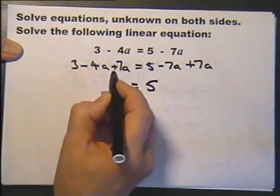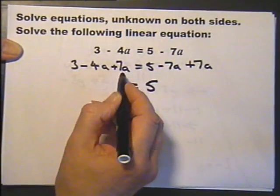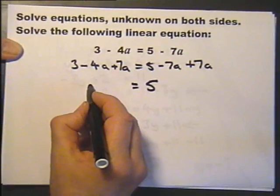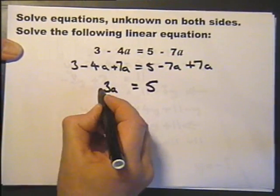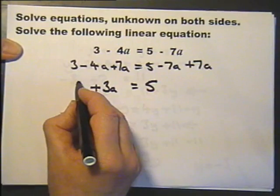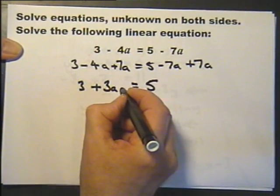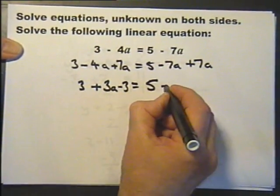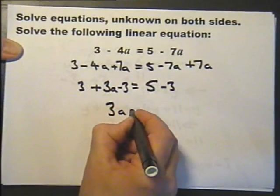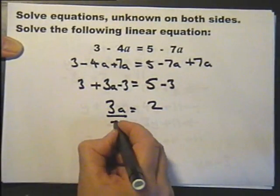Because that cancels leaving me with 5. This will be minus 4a plus 7a, which is the same as 7a minus 4a, which is 3a. Plus 3a. Now I need to subtract 3 from both sides, which will leave me with just 3a, and then divide both sides by 3.